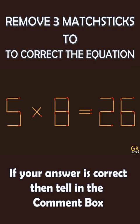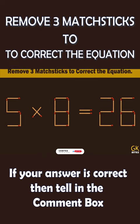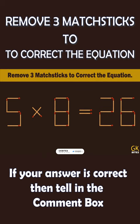5 multiply 8 equals to 26 — is this a correct equation? If it's wrong, then remove 3 matchsticks to correct the equation. Your time starts now.